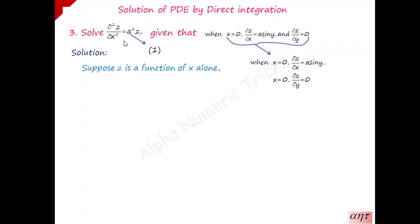Suppose your problem has z as a function of x alone. Here z is a function of two independent variables x and y, but to get the solution we assume z is a function of x alone. In that case the partial differential equation becomes an ordinary differential equation — ∂/∂x becomes d/dx. So you have d²z/dx² = a²z, which rearranges to d²z/dx² − a²z = 0. To solve this, you write the operator form, find the auxiliary equation and its roots, then find the complementary function and particular integral. The complete solution is z = CF + PI.